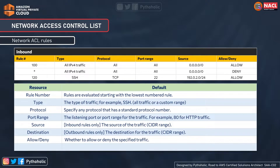The source field is for inbound rules only — the source of incoming traffic specified as an IP or CIDR range. The destination field is for outbound rules only — the destination for outgoing traffic, also as a CIDR block. And finally, allow or deny: if you wish to allow a rule you specify allow, otherwise you can deny it.